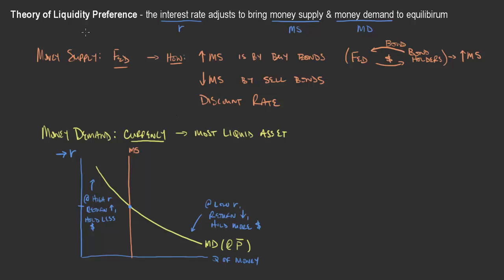We were just discussing the theory of liquidity preference, understanding the relationship between money supply and money demand, and how it's brought into equilibrium by the interest rate. What we're trying to understand is how that interest rate changes in the economy, or how we find an equilibrium interest rate. It's obviously where supply and demand for money intersect.